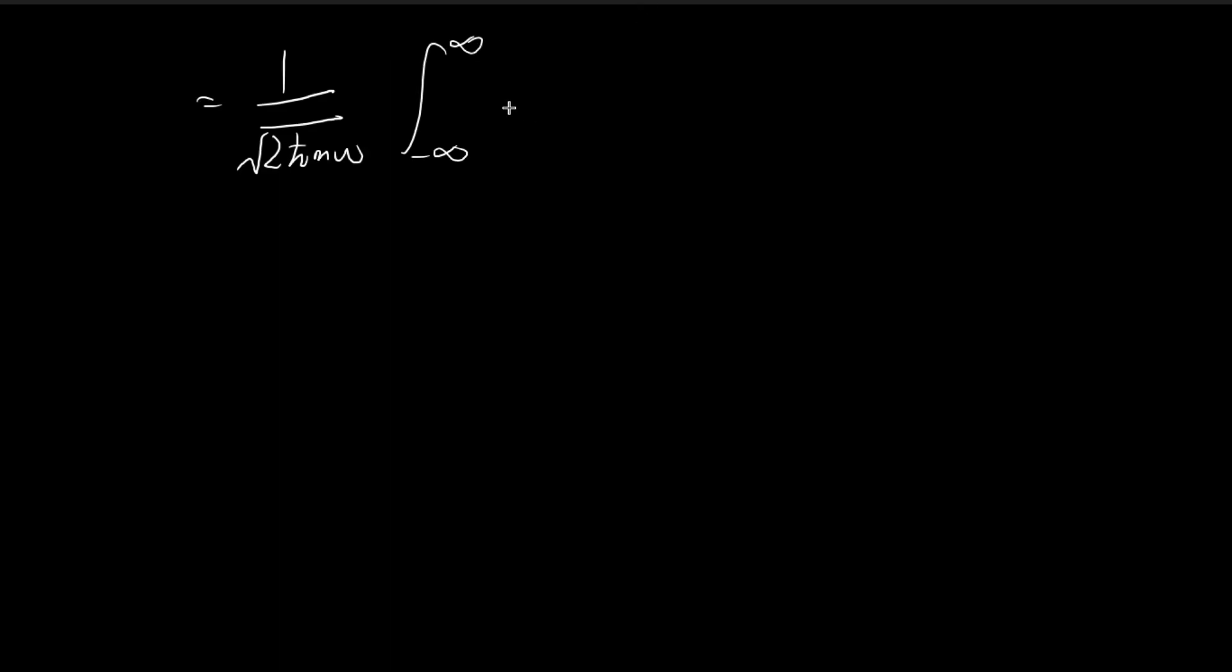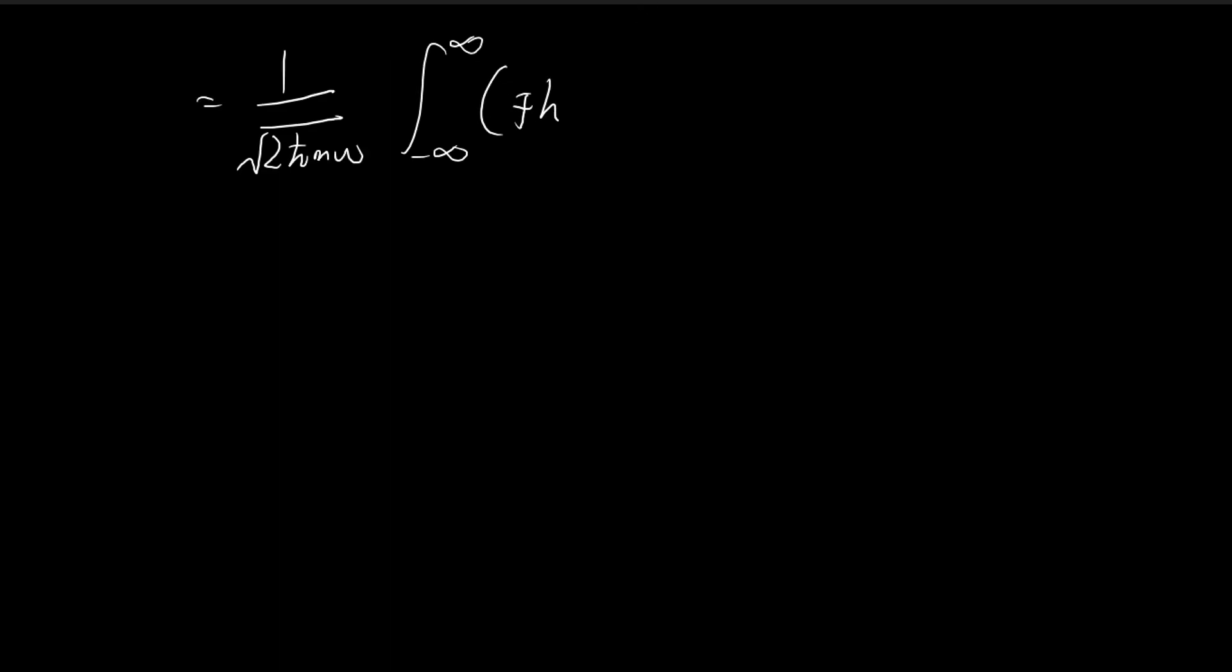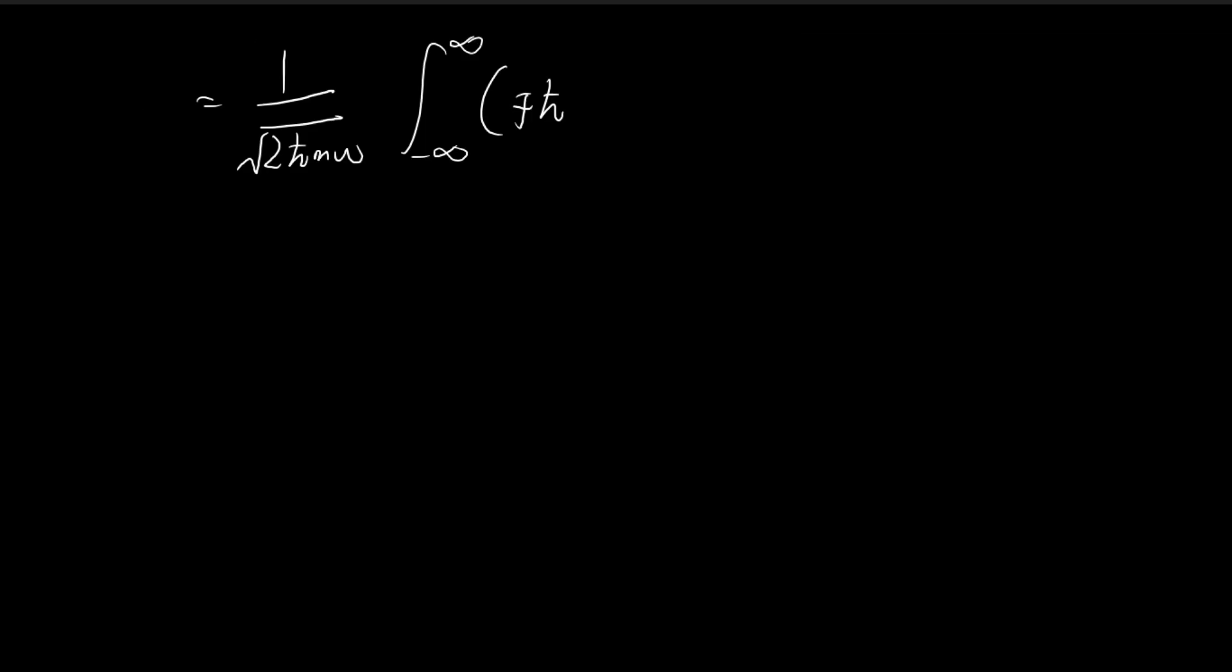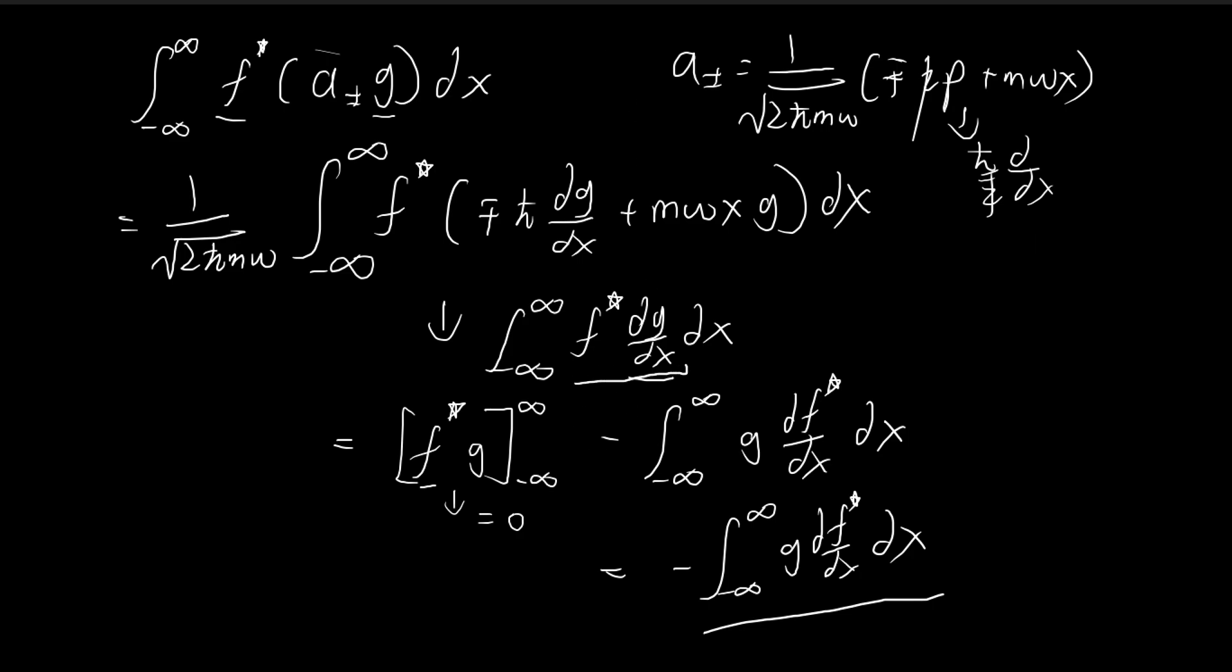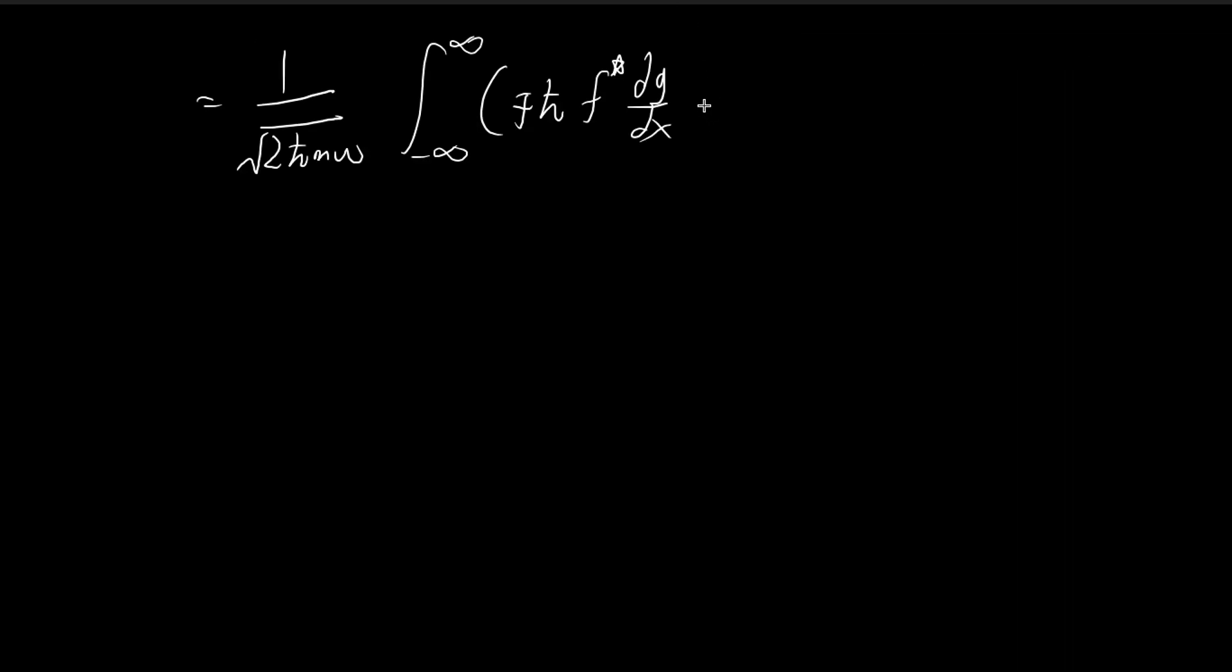So I'm moving on with the expression that we had before. So we had this integral from negative infinity to infinity. And then notice that inside this integral, we had exactly what we were dealing with before. So this f* times dg/dx, this is exactly this term. So you see why I did this proof now. And then we have m omega x, the conjugate of f times g dx.